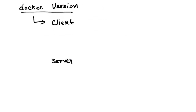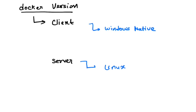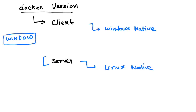Going back to supported platforms — when you install Docker on a Windows platform, whether Windows Desktop or Windows Server, the client will be a Windows native application. By default, the server is Linux native, so all containers created within Docker on Windows use Linux container technology behind the scenes.